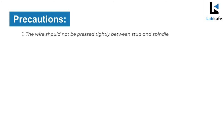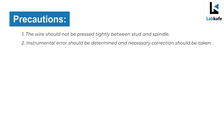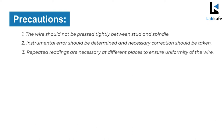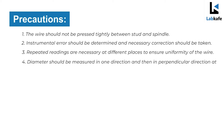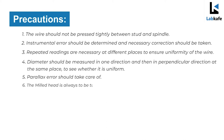Precautions: the wire should not be pressed tightly between the stud and spindle. Instrumental error should be determined and necessary corrections applied. Repeated readings are necessary at different places to ensure uniformity. The wire diameter should be measured in one direction and then the perpendicular direction at the same place. Parallax error should be taken care of. The thimble head should always be turned in the same direction; otherwise backlash error will occur.